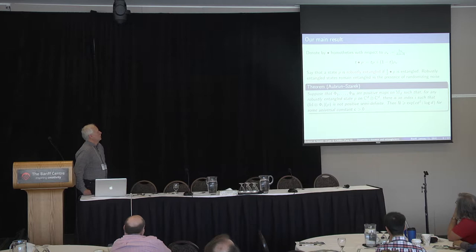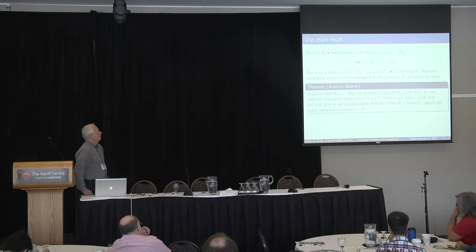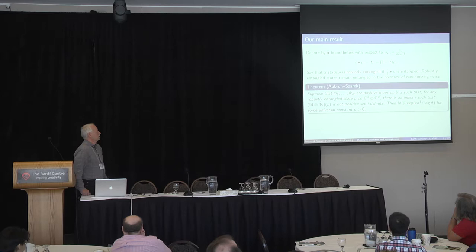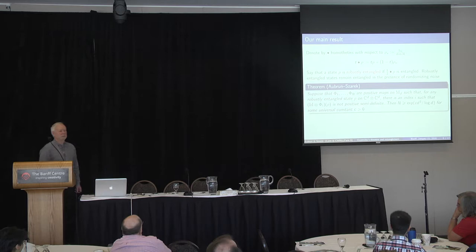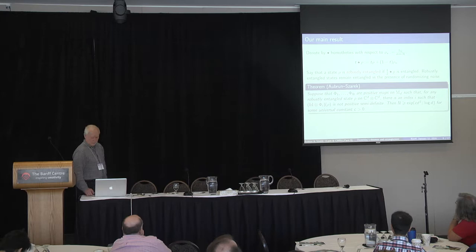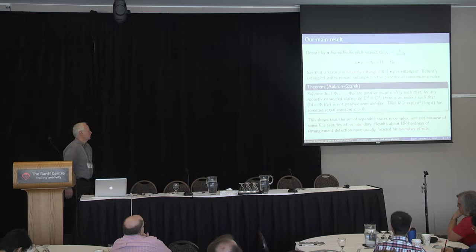The main result is as follows: whenever we have a family of N witnesses which, using the Horodetsky criterion, allow us to detect entanglement of every robustly entangled state, then the cardinality of that family must be exponential, at least in the third power of the dimension of the space. That's the main result.